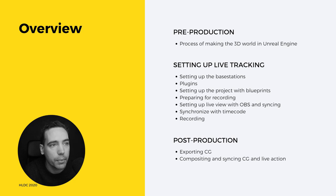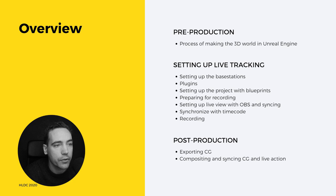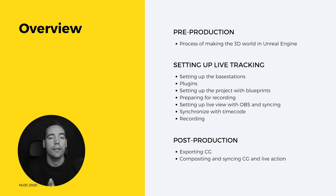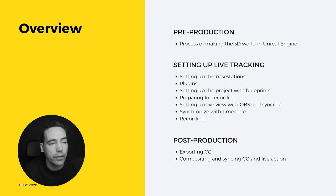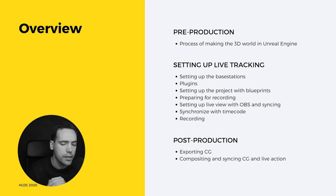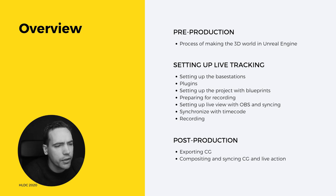We're going to go through the pre-production of making a 3D world in Unreal Engine. I'll show you one of the worlds I made, set up live tracking, set up the base stations and plugins, set up the project with blueprints, prepare for recording, set up live view with OBS, synchronize with timecode, and recording. We'll probably also have time to look at post-production — how to export the CG and combine everything in After Effects.